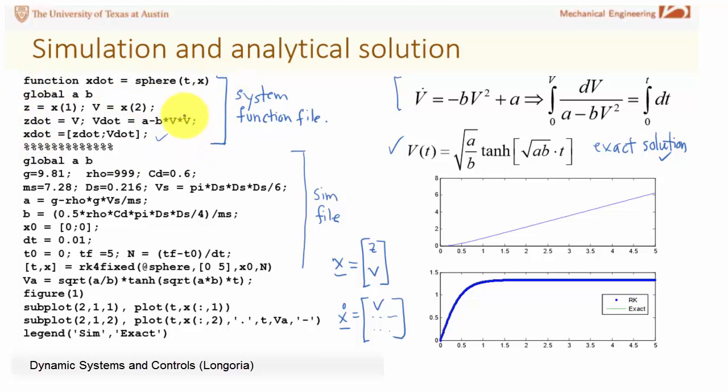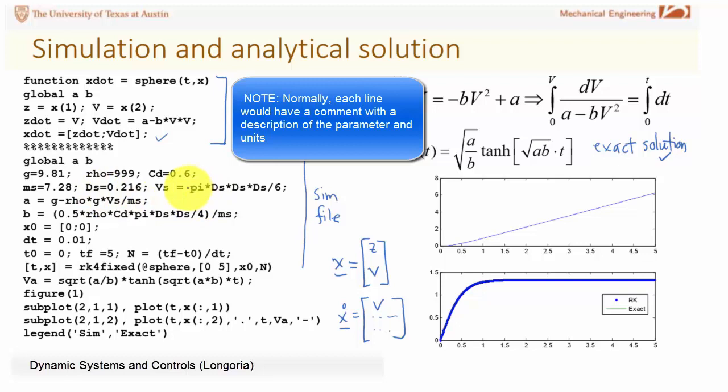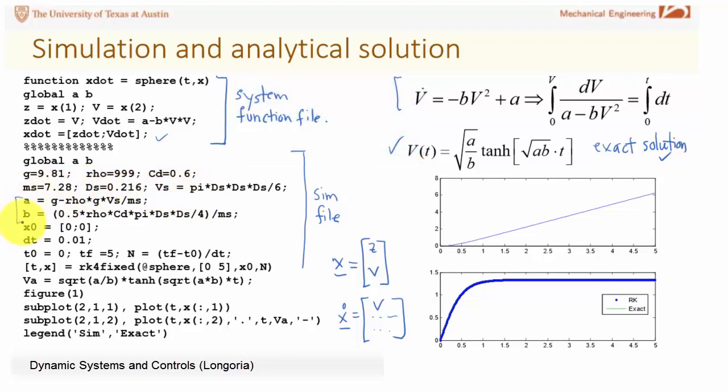This is the file here that would call this file through an ODE solver. Note the first line, sometimes I would have comment statements before this with description of what the program is. The first functional line would be the global statement, this makes a and B global because I'm going to need them in here. I define parameters, gravity, gravitational acceleration, the density of the fluid rho, the drag coefficient for the sphere and so on, different parameters that were defined in the problem statement. Then I can compute a and B based on my physical problem.